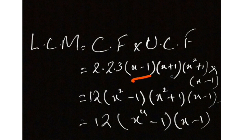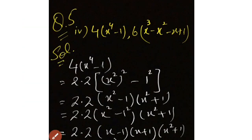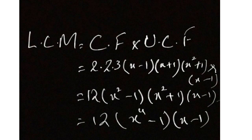Yeh 3 values jo hain hamare paas — dubara se agar aap peechhe check karein — yeh usi ki extension hai x⁴ minus 1 ki. Yahan se yeh yahan tak pahuncha, phir yahan se yahan. Toh hum reverse lagaenge: yeh ban gaya (a plus b)(a minus b) — a² minus b² — then yaad rakh lein yahi same amount banegi lekin yeh plus mein, toh yeh negative mein, aur phir yahi wali amount badhegi. Toh x⁴ ban jaegi minus 1 aur baaki question as it is. Guys, yeh kaafi important question hai, inko dhyan se samjhiyega.